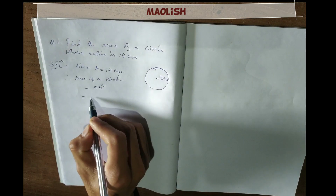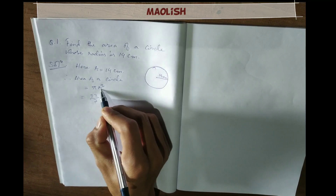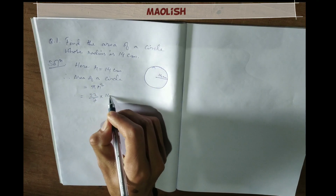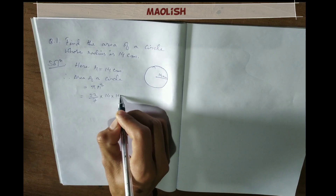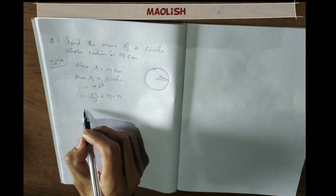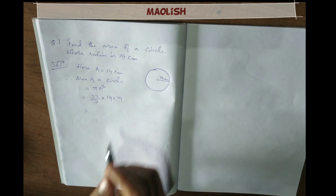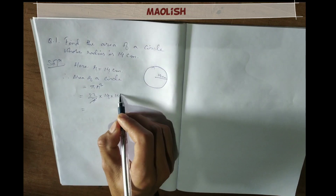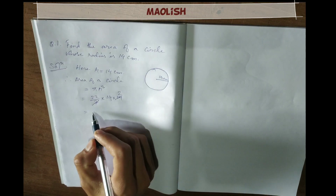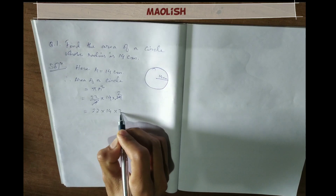Pi value is 22 by 7, r squared — r value is 14, so 14 into 14. So 7 cancels with 14, giving 2, so we have 22 into 14 into 2.